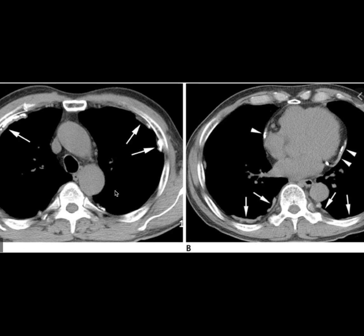Now moving on to how to identify pleural plaques. Plaques are obviously deposits — you can see here this is the normal pleura lining, but here you can see some abnormally deposited materials, which suggests pleural plaques. They are attached and near to the pleura. The major difference in identifying pleural effusion versus pleural plaques is: in pleural effusion the pleura will become hazy, and in pleural plaques you will see deposits near the pleura. Even here, you can notice these are the pleural plaques.